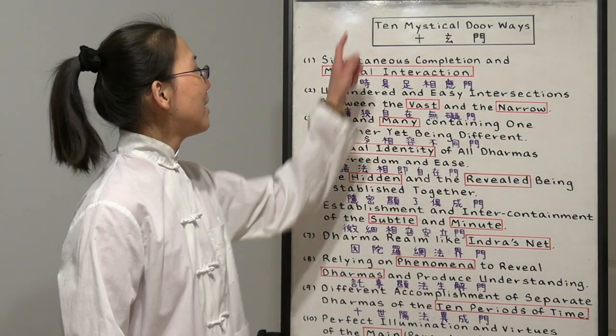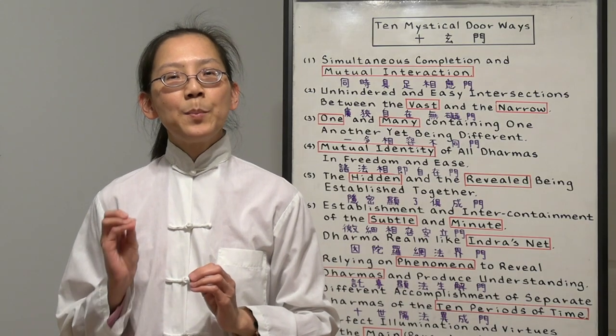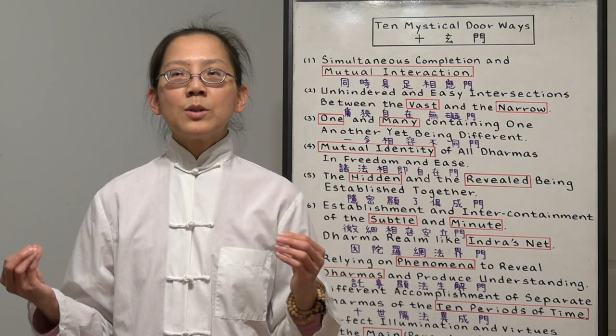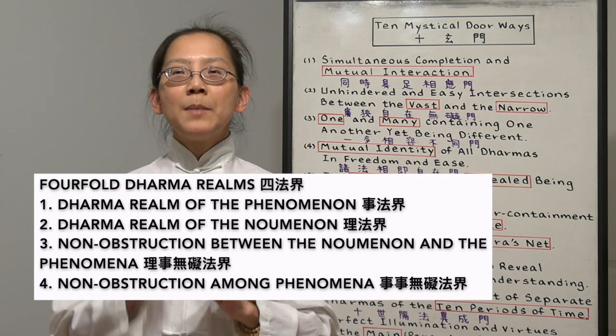Today we're going to talk about 10 mystical doorways. In the Huayin school of Buddhism, it talks about the Dharma realm, which is the world of our pure mind. So it talks about four-fold Dharma realm.